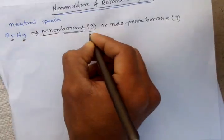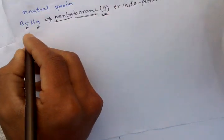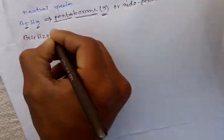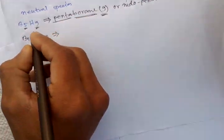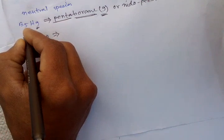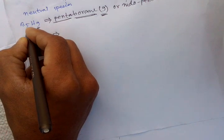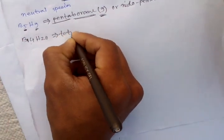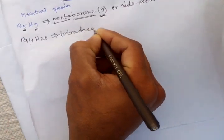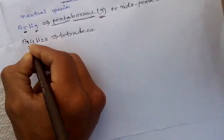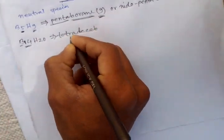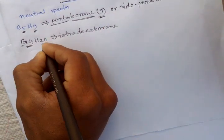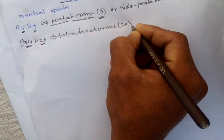The number of hydrogen atoms goes within brackets. Another example: B14H20. The number of boron atoms is 14, tetradeca, so tetradecaboron, and then the number of hydrogen atoms, 20, within brackets.